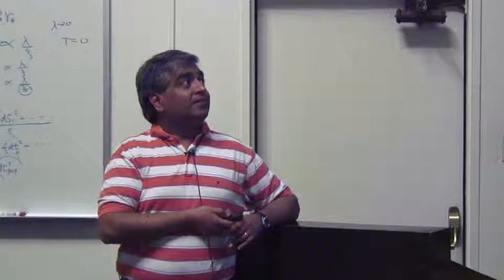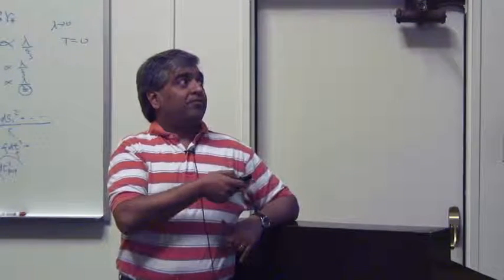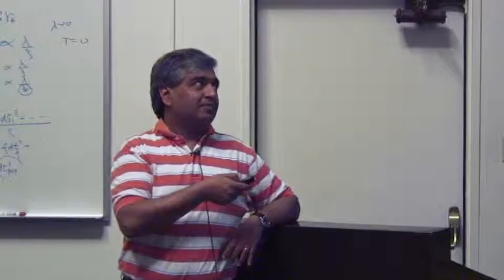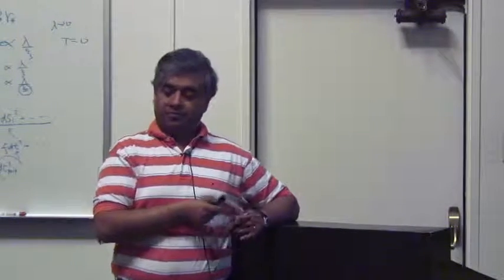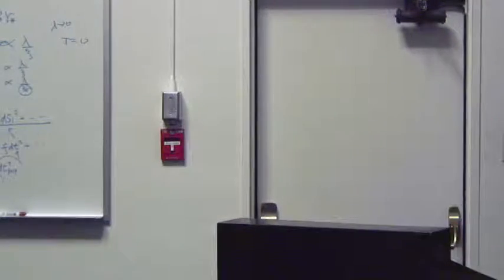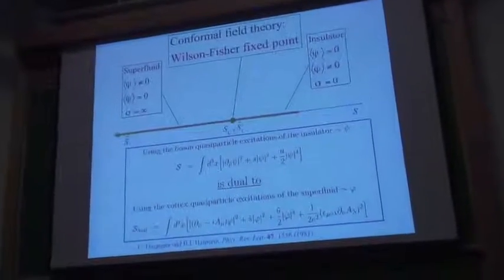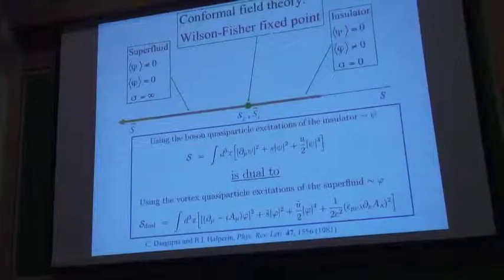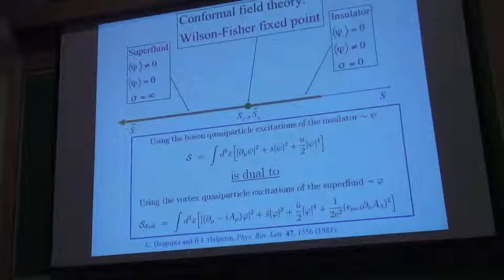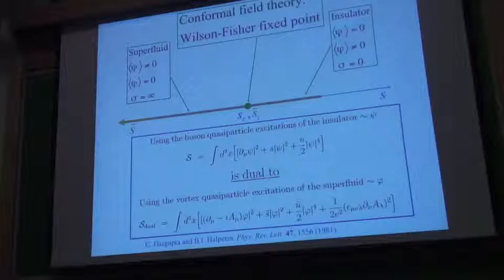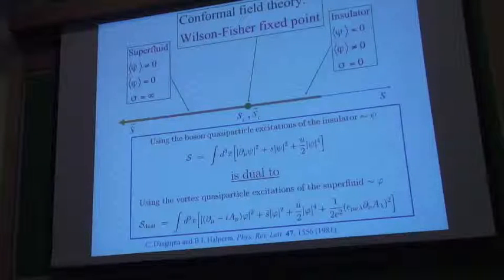That dual theory is a theory of a field I call phi here, and it's actually the field that creates a vortex. There are two ways of thinking about the system: in one way you have worldlines of particles and antiparticles, and in the other way you have worldlines of vortices — the vortices in the superfluid and anti-vortices. Those are also relativistic because the number of vortices must equal the number of anti-vortices. One important difference is that vortices have long-range forces.